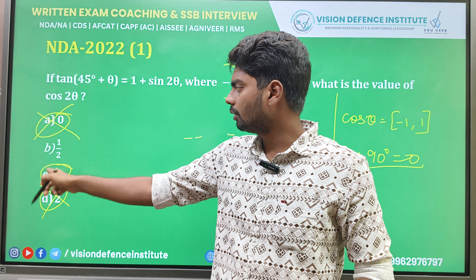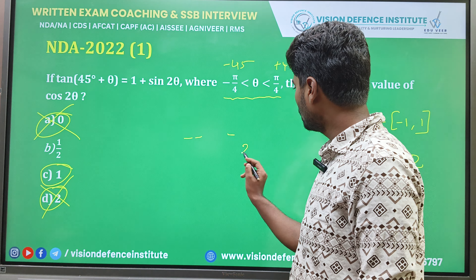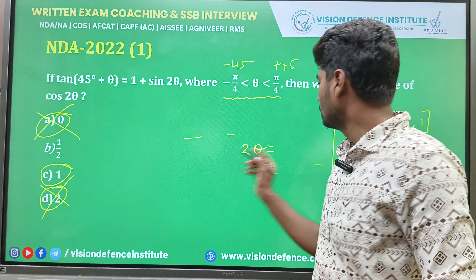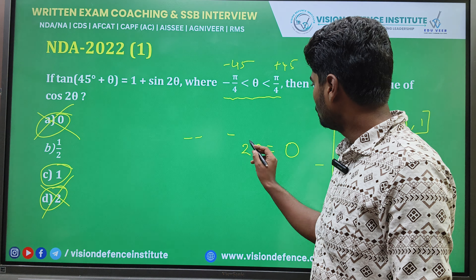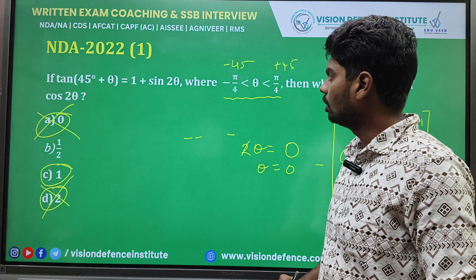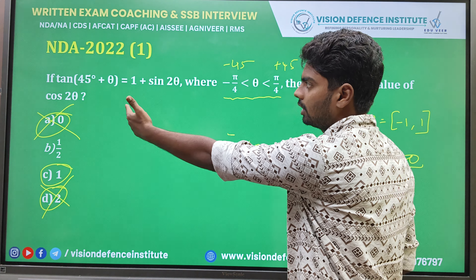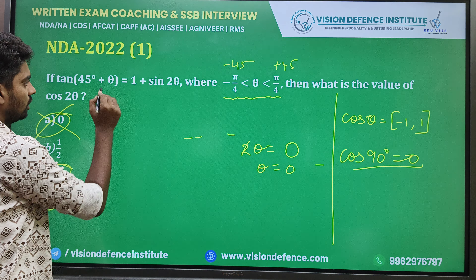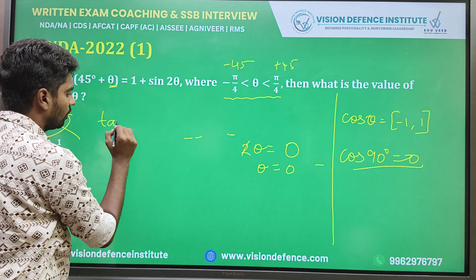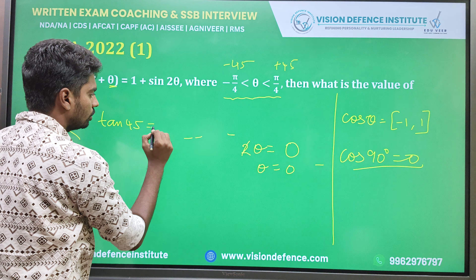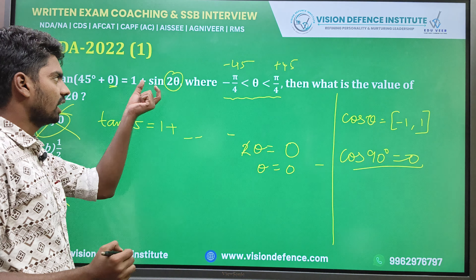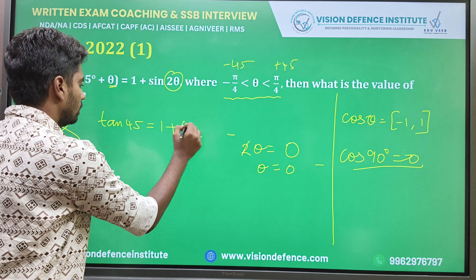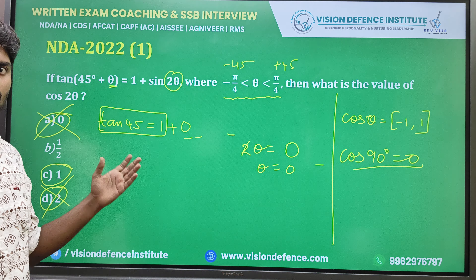We try the other option: if cos2θ = 1, then 2θ = 0, so θ = 0. Applying θ = 0 to the problem: tan(45 + 0) = 1 + sin(0), which gives tan45 = 1 + 0 = 1. Since tan45 = 1, both sides match. We got the answer.